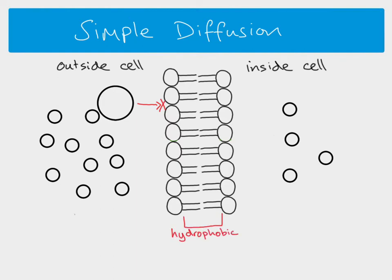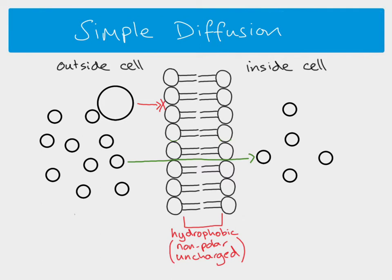Another problem is that the middle part of the phospholipid bilayer is hydrophobic because of the fatty acid tails. That means if you have molecules which are hydrophilic, they won't be able to pass through. The hydrophobic centre part of the bilayer is non-polar and uncharged. So a small uncharged molecule can go straight through, but a charged molecule — such as an ion like sodium or chloride, or even water because water is polar — cannot move straight through.